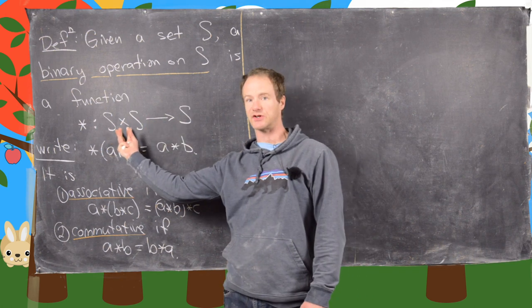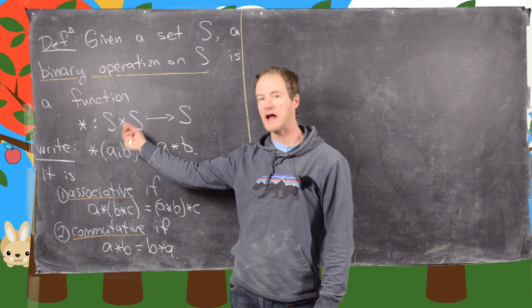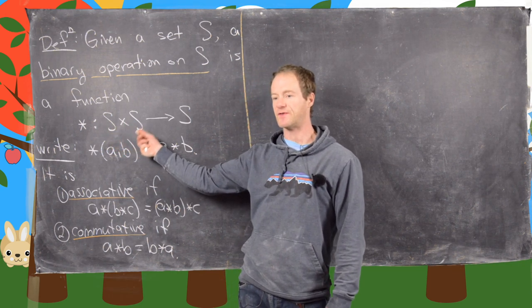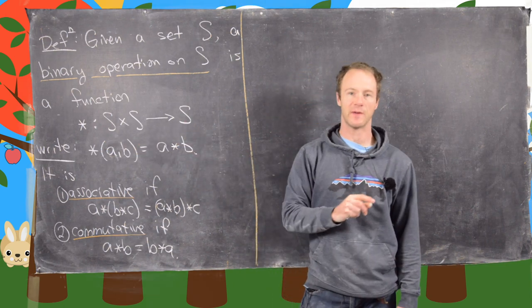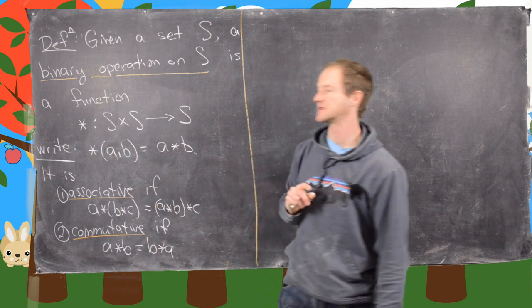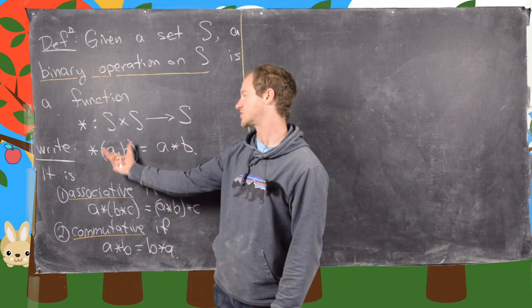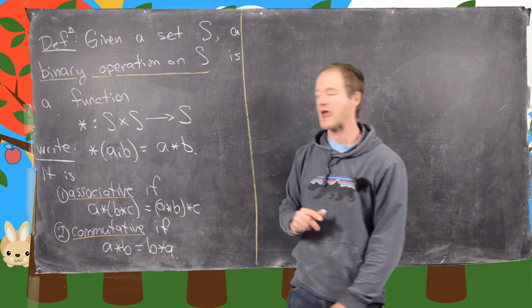So binary means there's two copies of S here, and we're thinking about combining an element from each of those copies of S to produce a new element from S. So we'll write it like this: Star is a function from S cross S to S. But in general, we usually write, instead of star of AB, we'll write A star B.